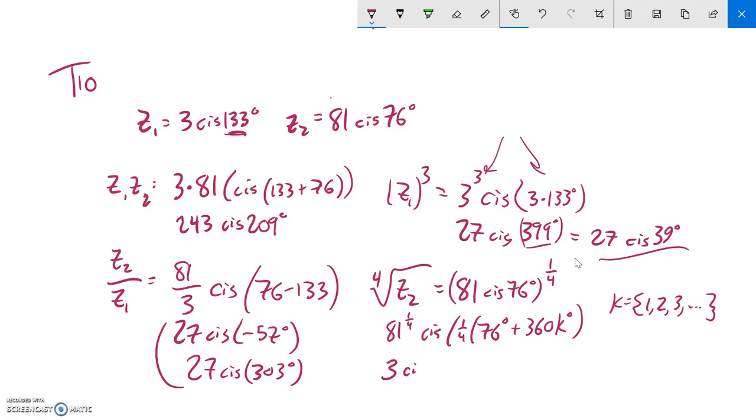So 81 to the one-fourth power, that's just 3. And then notice one-fourth of 76, that's 19, and one-fourth of 360 is 90. So one of my possibilities is 3 cis 19 degrees. And then if I add 90 to that, it'd be 3 cis 19 plus 90, which is 109. And if I add 90 to that...